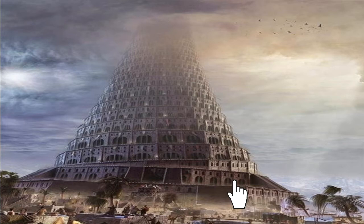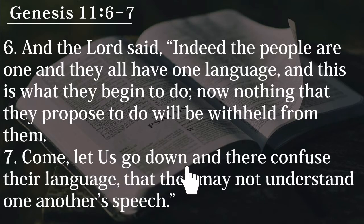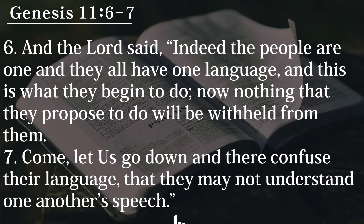They wanted to be the same as God, so they built the tower. But what did God say? Through Genesis chapter 11 verse 6: 'And the Lord said, Indeed the people are one and they all have one language, and this is what they begin to do. Now nothing that they propose to do will be withheld from them. Come, let us go down and confuse their language, that they may not understand one another's speech.'